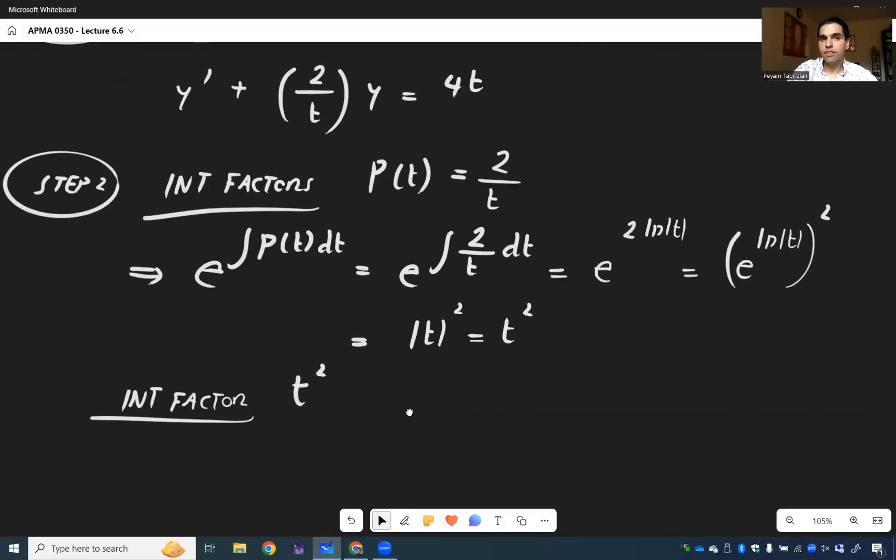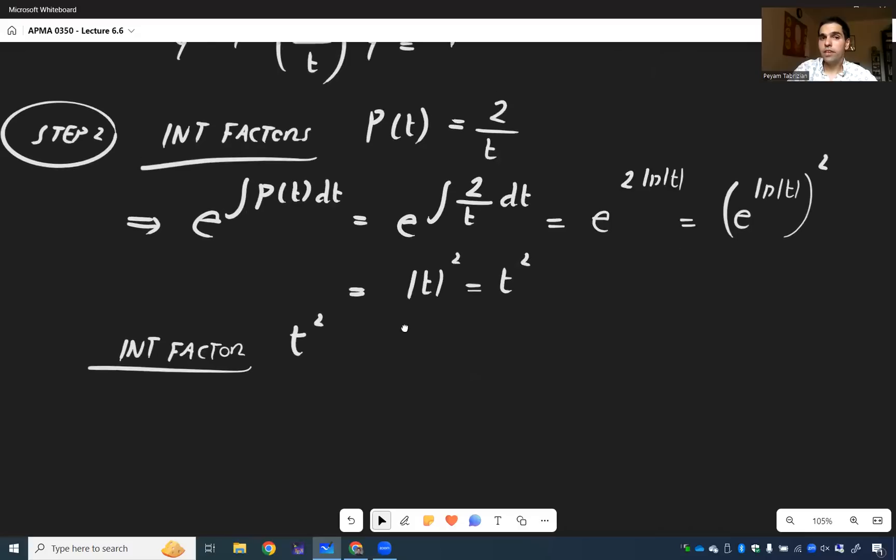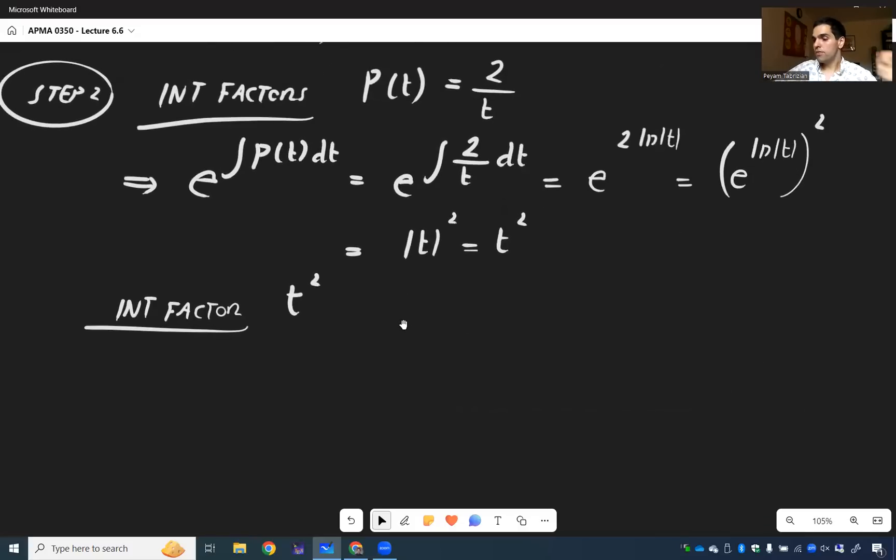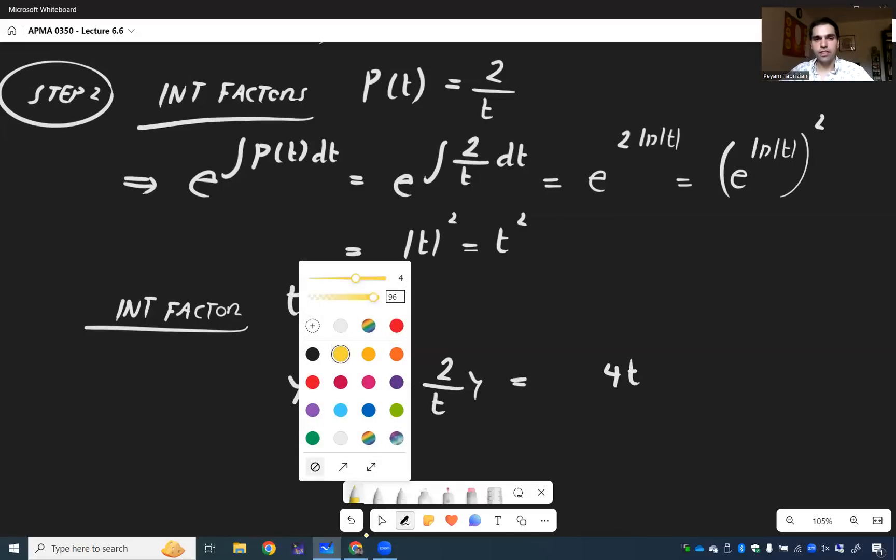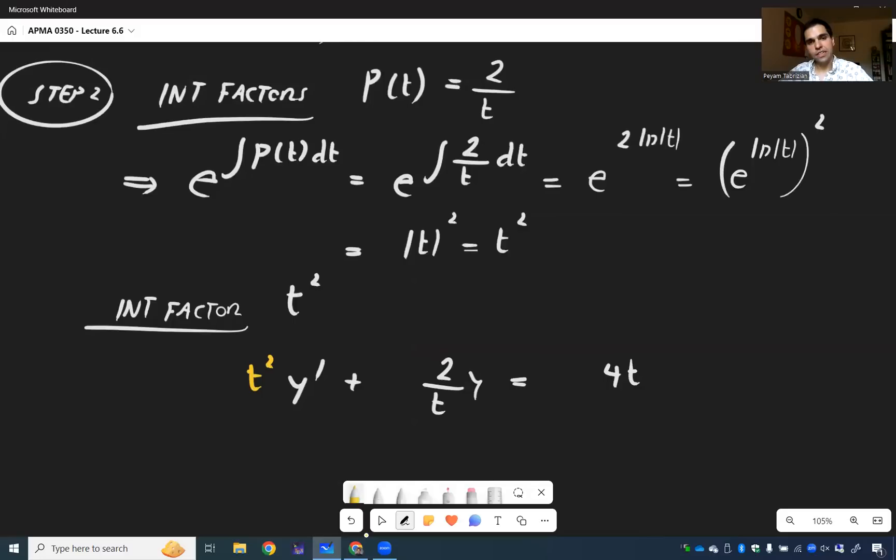Once again, you take your differential equation, multiply it by t squared, and then see if a magic happens. And careful, you take the one in standard form. So you have y prime plus two over t, y equals four t. And that's what you multiply by t squared.